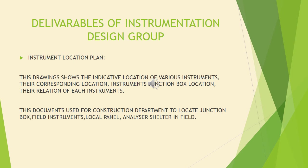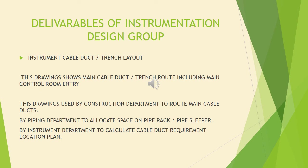The instrument location plan shows the indicative location of various instruments, their corresponding locations, junction box locations, and the relationship between each instrument. It is used by the construction department to locate junction boxes, field instruments, local panels, analyzer shelters in the field. The instrument cable duct and trench layout shows the main cable duct and trench route including the main control room entry, and is used by the construction department, piping department, and instrument department.